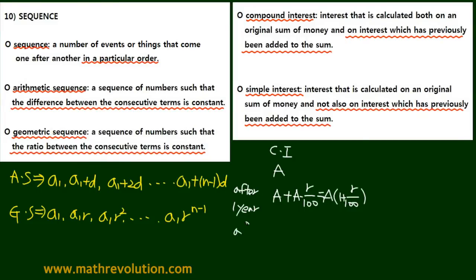After two years, we're going to have A times 1 plus R over 100. This is from the equation above, and then we add the second year. So A times 1 plus R over 100 times R over 100, because the interest is being compounded. The end result is A times 1 plus R over 100 to the power of 2.